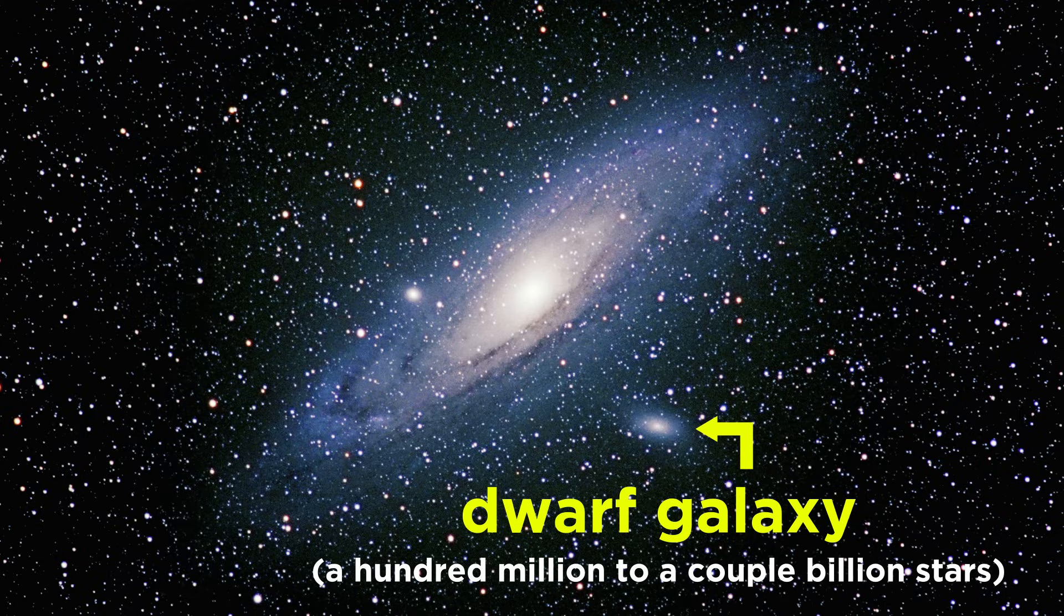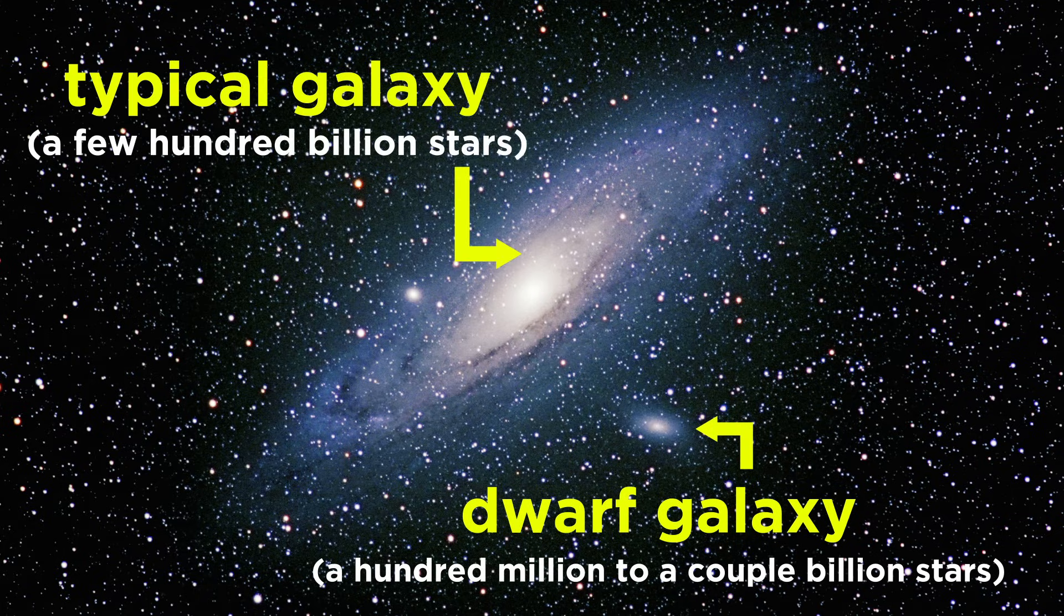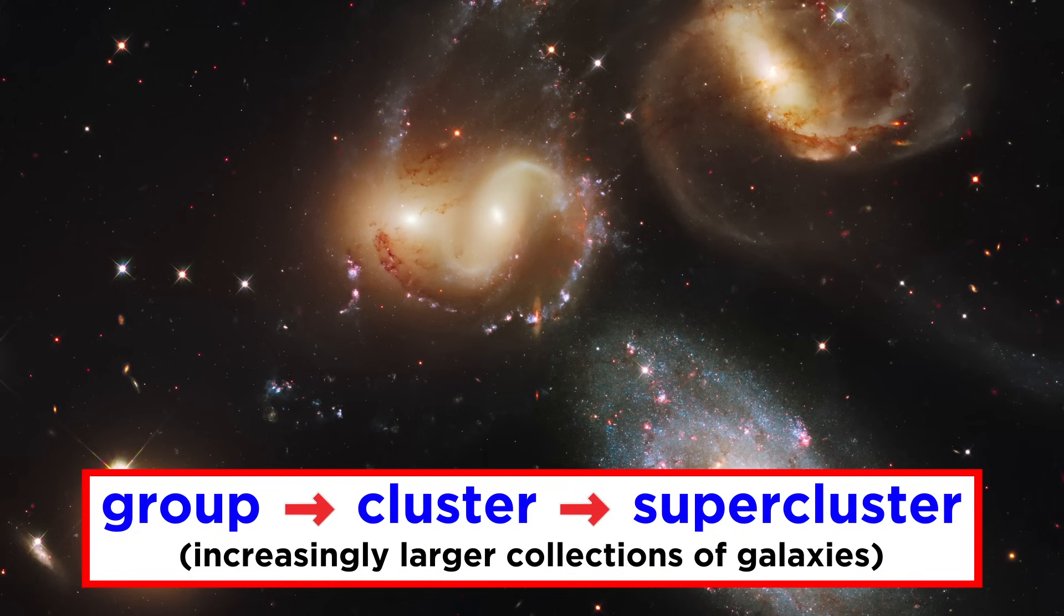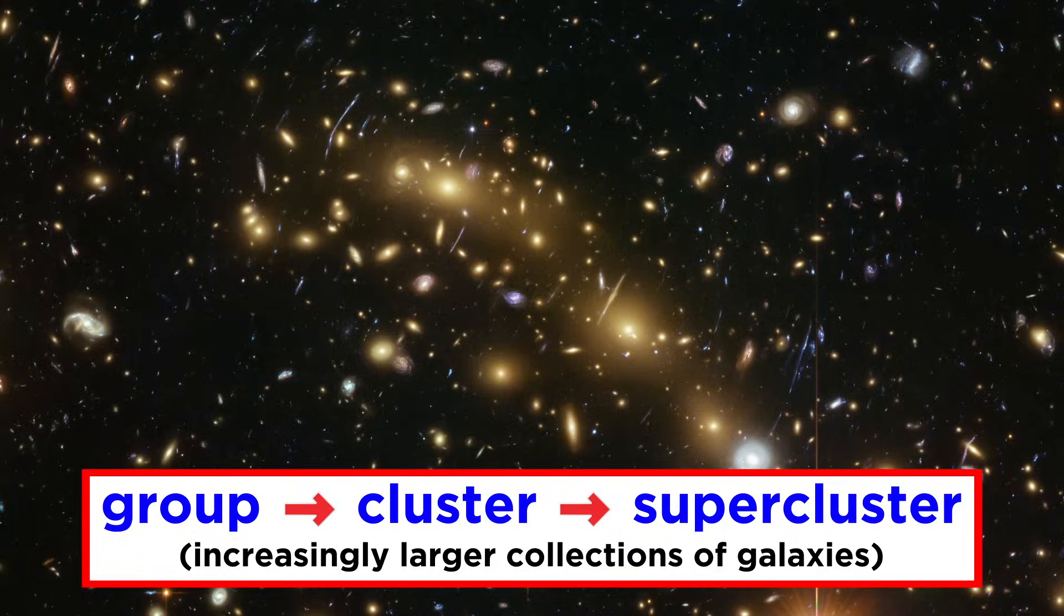Some of these are dwarf galaxies, consisting of around a hundred million to a couple billion stars. And some are much larger, with a few hundred billion stars. But gravity didn't stop there. These huge galaxies, along with the dark matter they are embedded in, exert even greater gravitational influence, such that they collect to form groups, clusters, and superclusters.